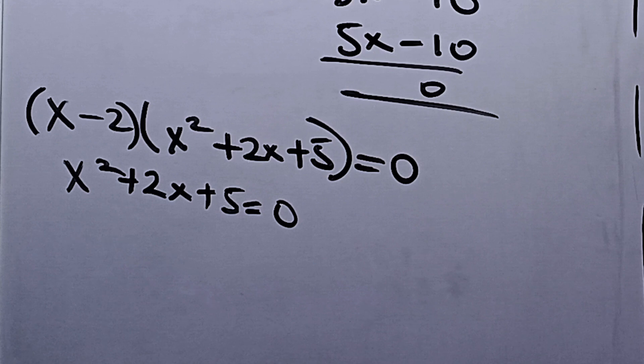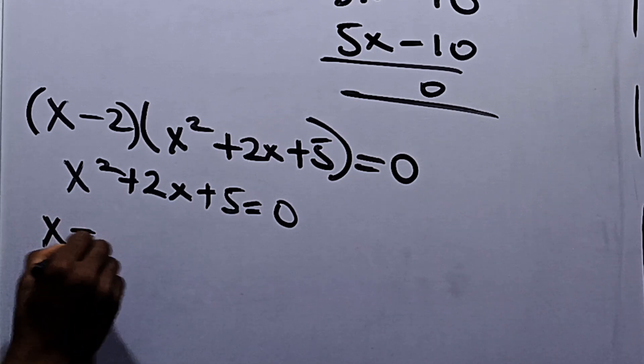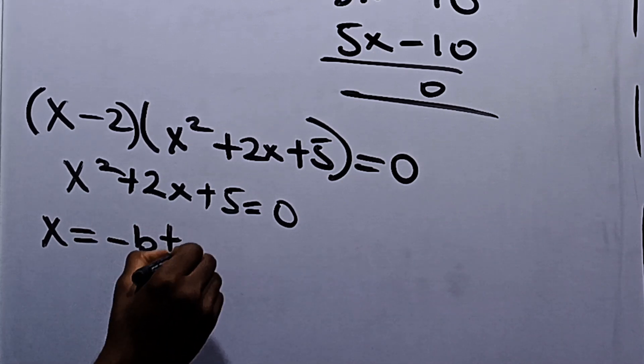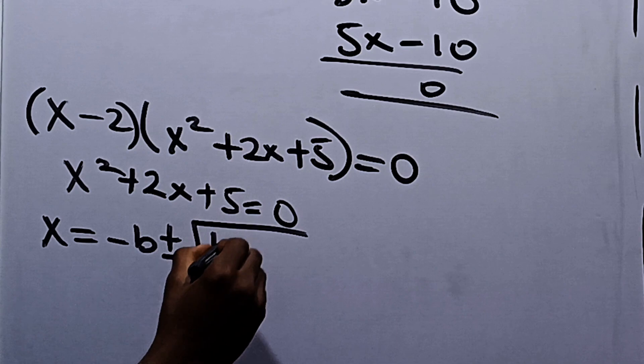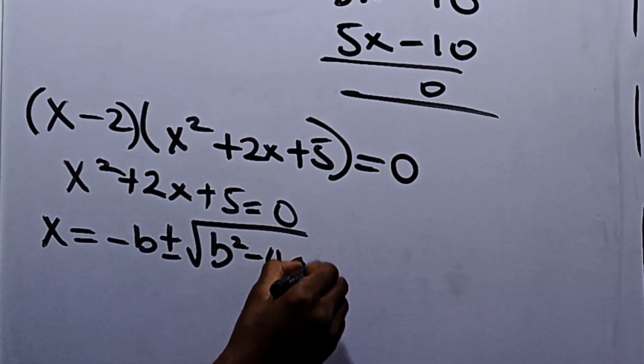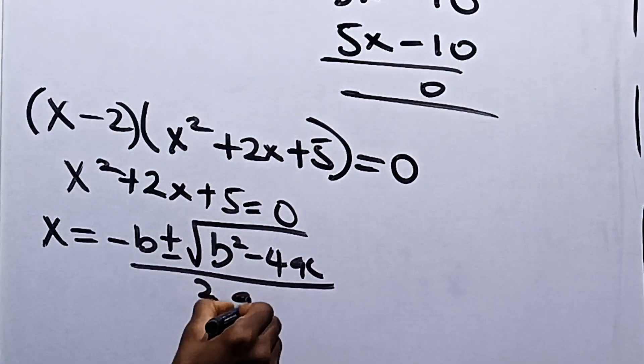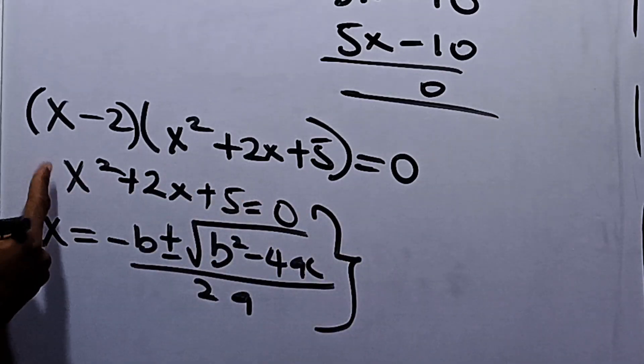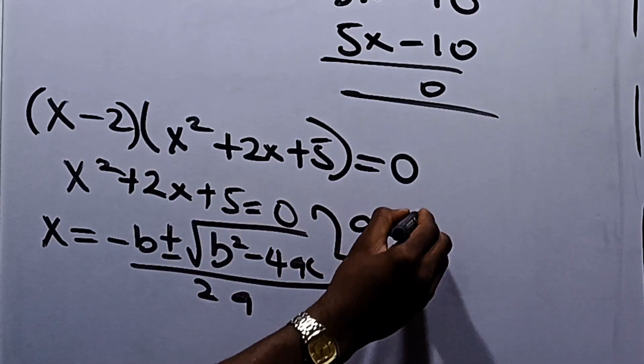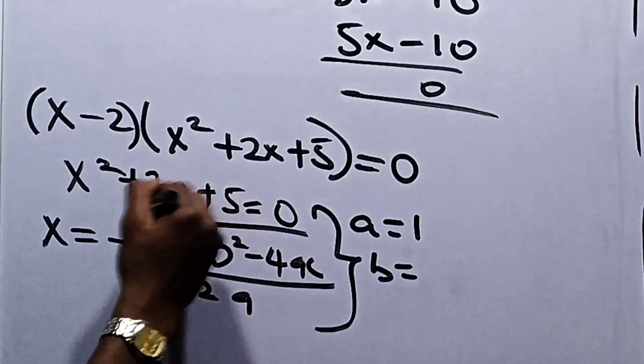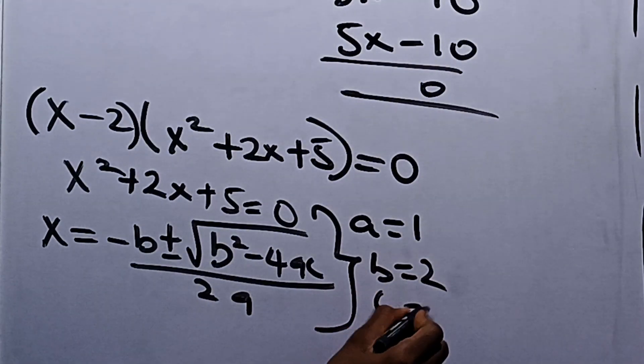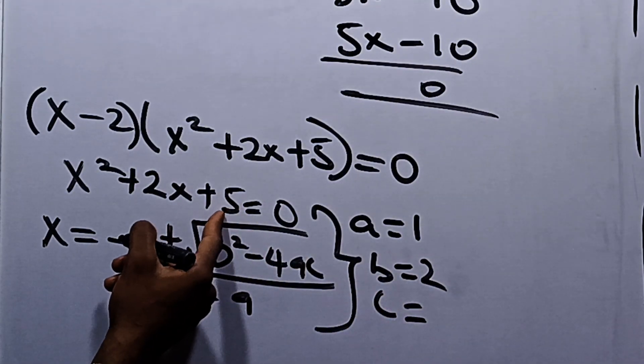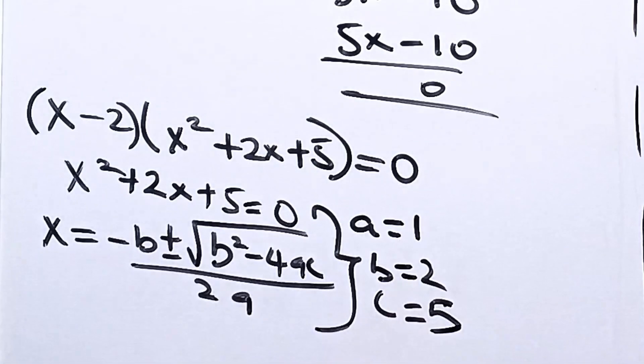Now let's equate this. We have x squared plus 2x plus 5 equals 0. The quadratic formula states that x equals negative b plus or minus square root of b squared minus 4ac all over 2a. Our a is the coefficient of x squared, which is 1. Our b is the coefficient of x, which is 2, and our c is 5.